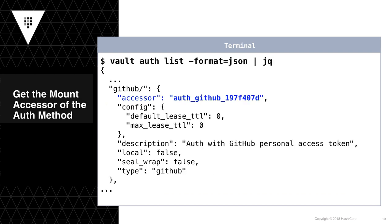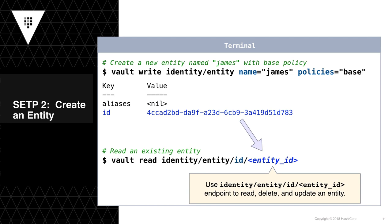Next, we inspect the currently enabled auth methods, which now includes the GitHub auth method we enabled and configured in the previous slide. We run the command 'vault auth list' with the format parameter set to JSON, and pipe the results through the jq utility to format and color code the JSON output. Within this output, take note of the accessor value. In step two, we'll create an entity by writing to the identity entity endpoint, setting the name of the new entity to James and associating it with the base policy. The outcome is the creation of a new entity with the corresponding entity ID presented back to us.